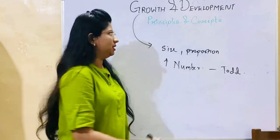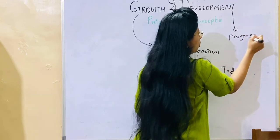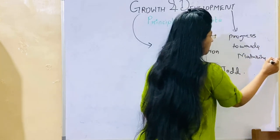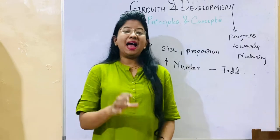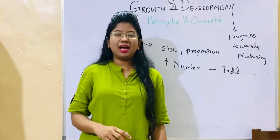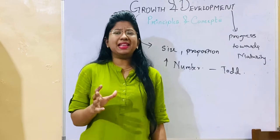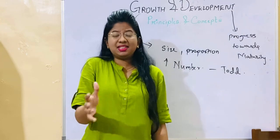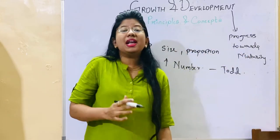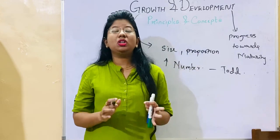What do you mean by development? Development means progress towards maturity. For example, if you have a new ball and after 2 years you see that ball, there can be some rash on it — it will not be that new. It has changed over time. That is development — progress towards maturity. Growth talks about size and development talks about maturity.